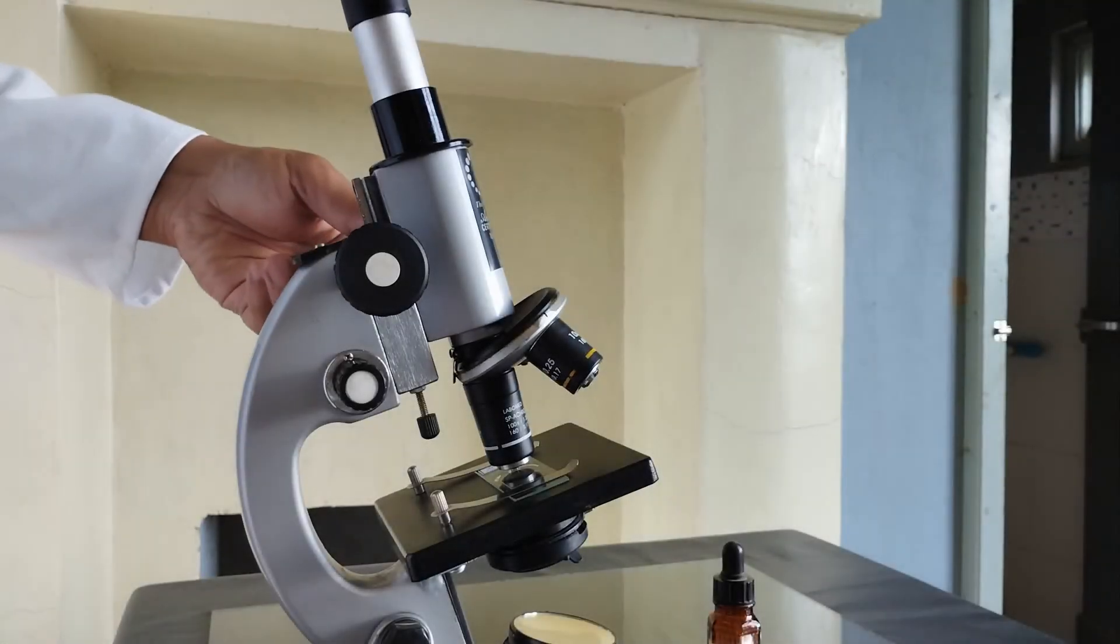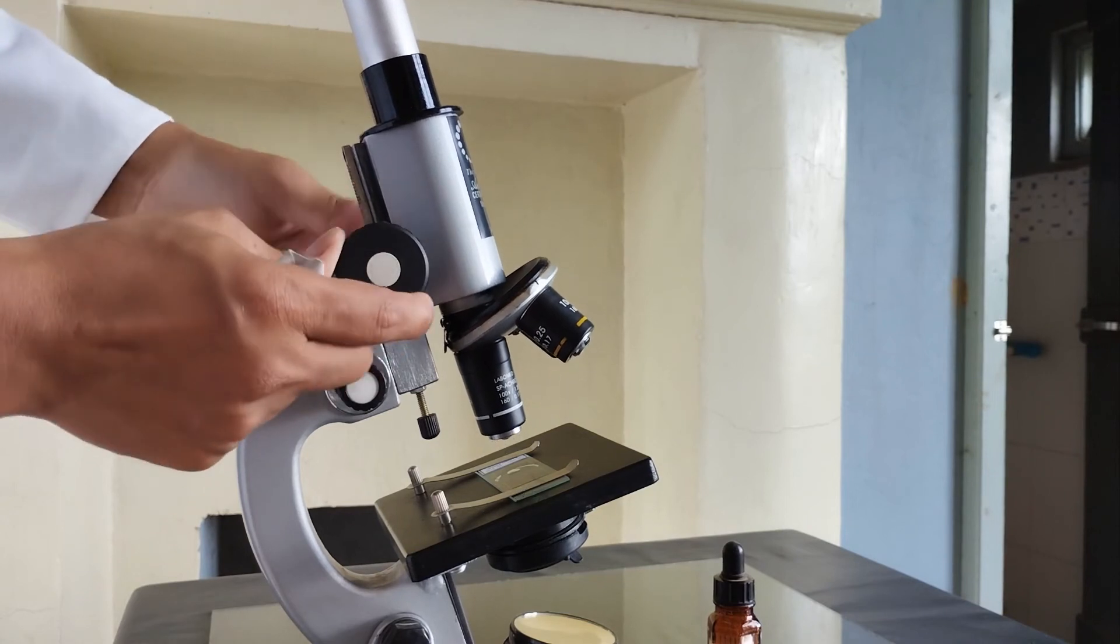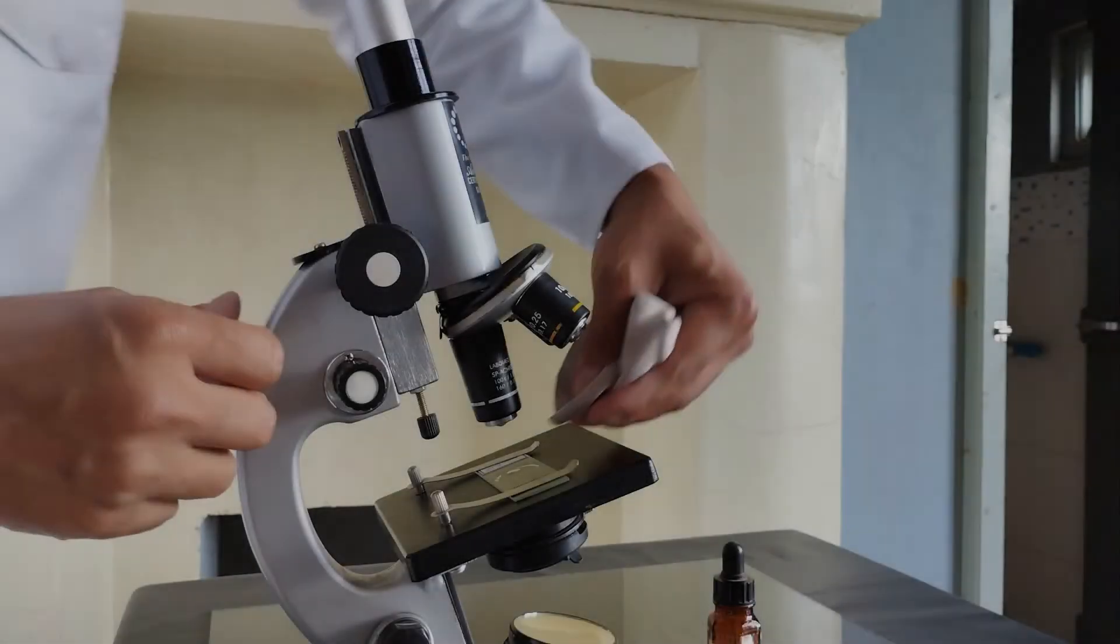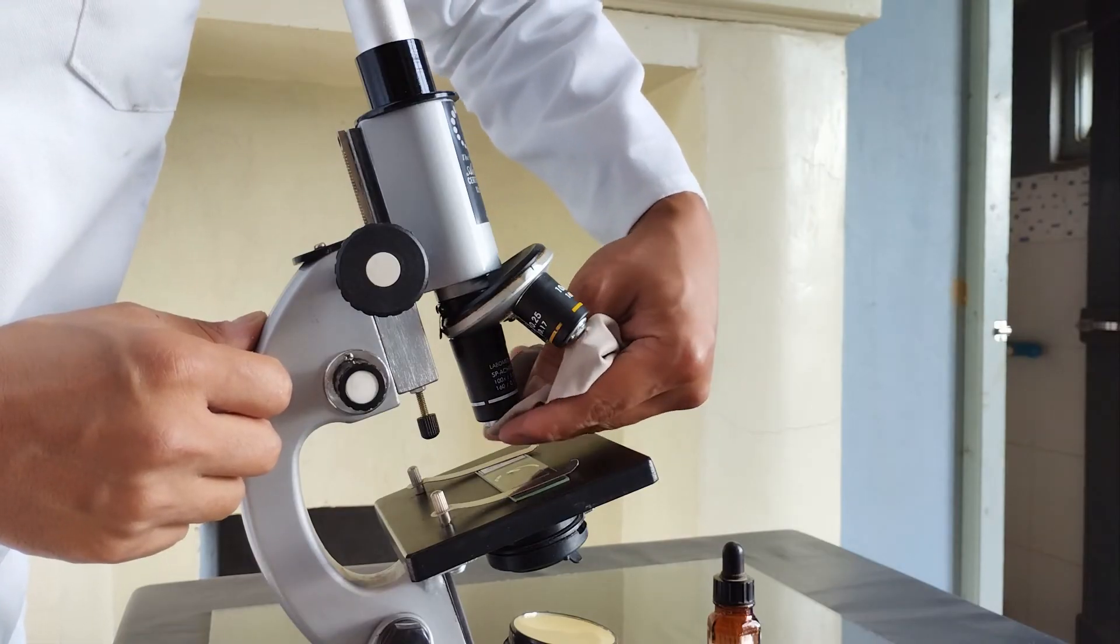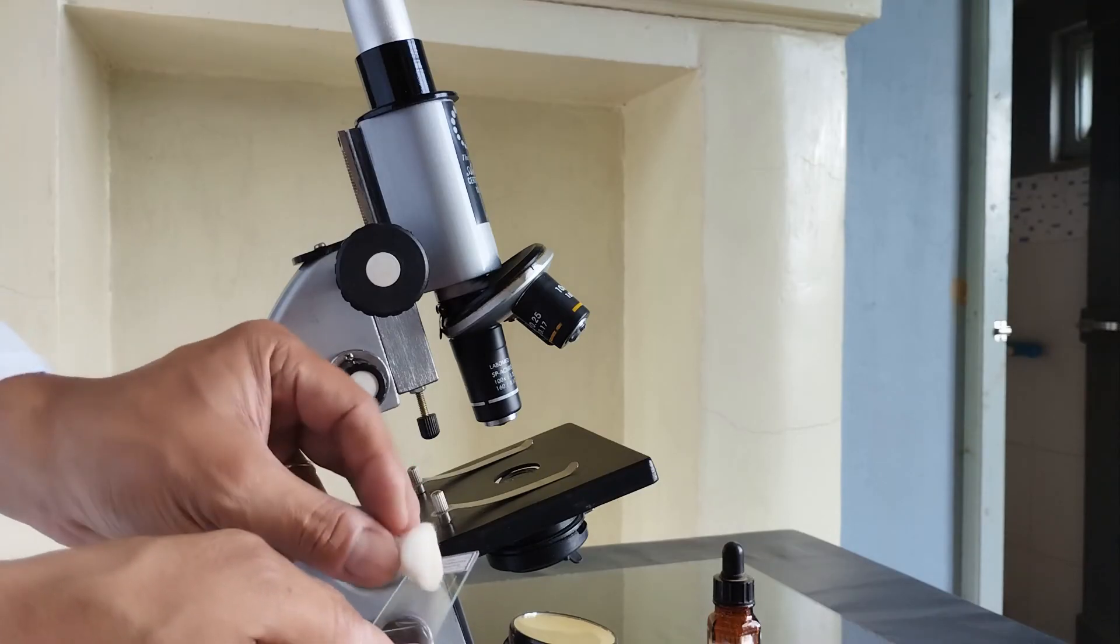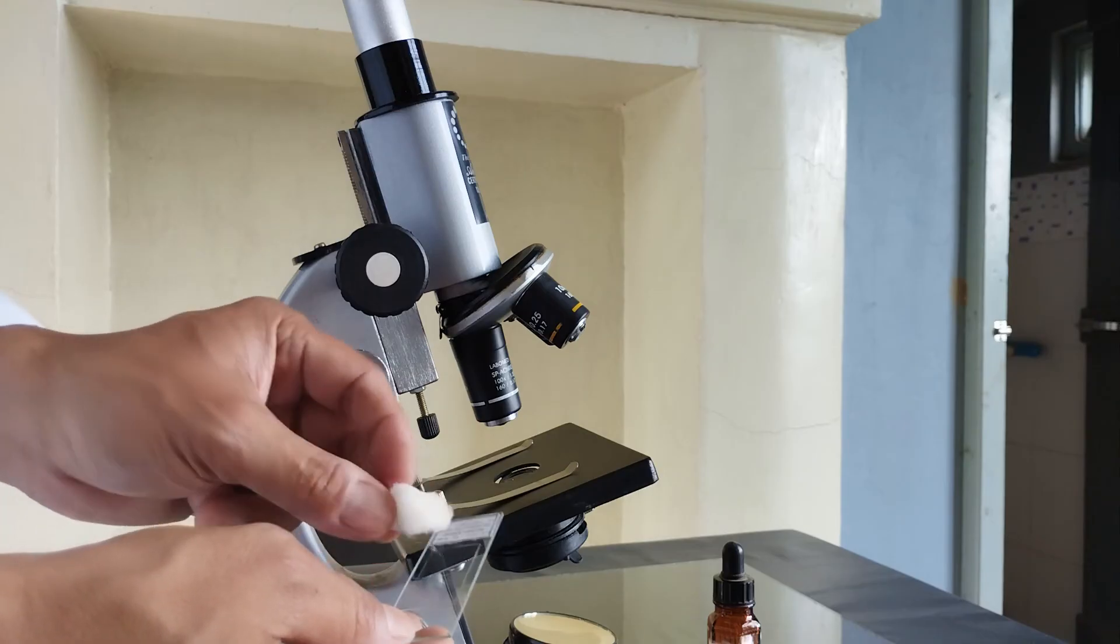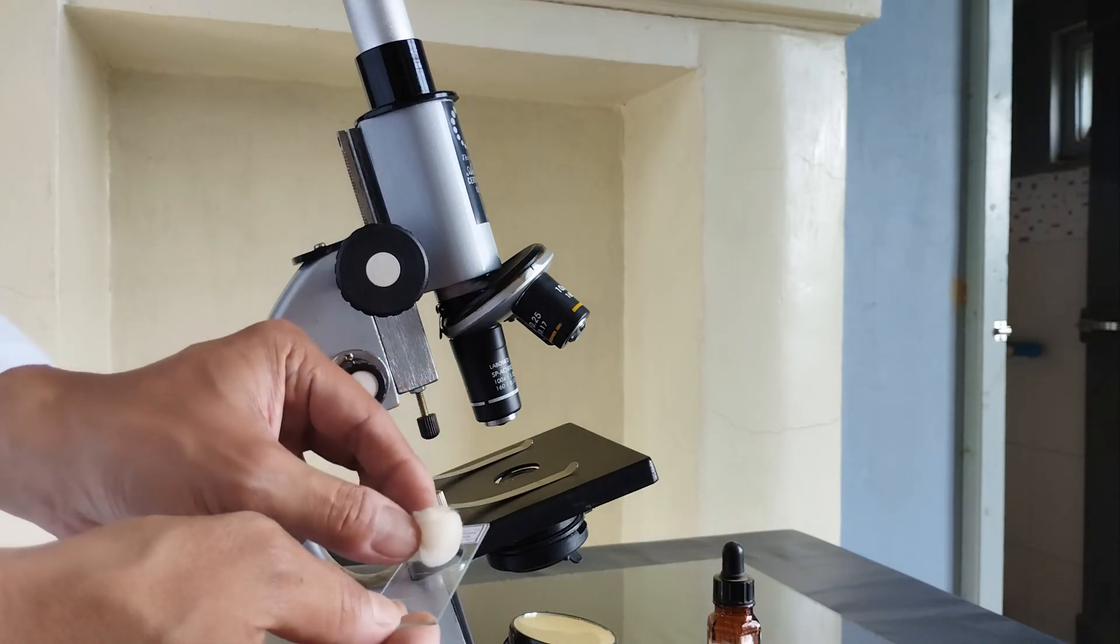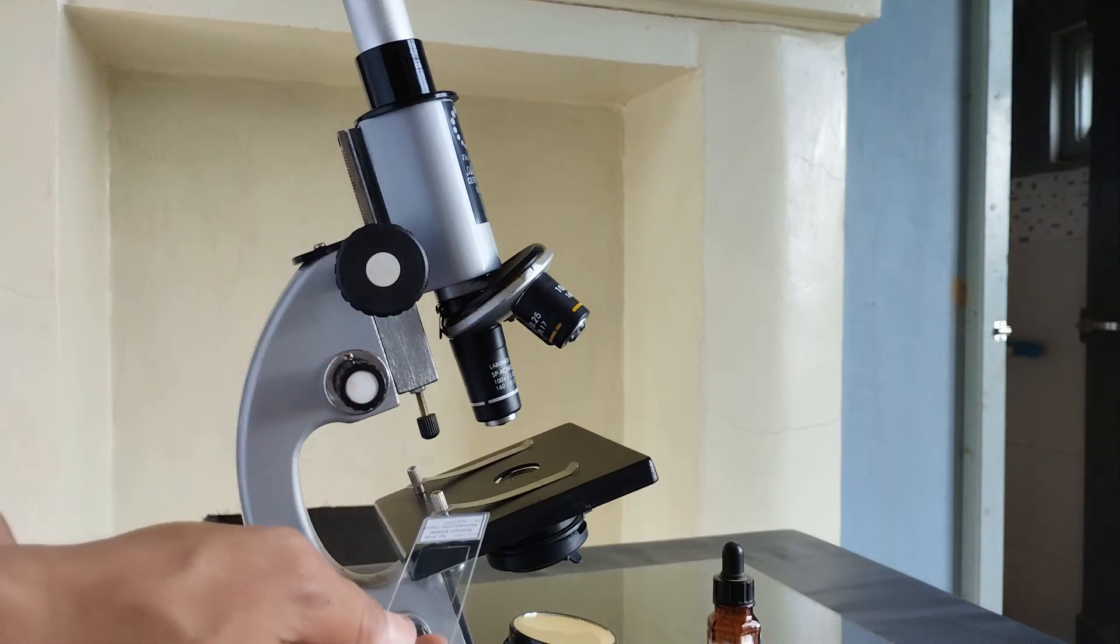Once you're done examining the slide, lift the objective to a fairly high point using the coarse adjustment knob. Wipe the residual oil off of the objective lens using a clean and dry piece of lens cloth or lens paper. Also wipe the oil off from the slide using a cotton ball dipped in acetone. Do not use harsh chemicals such as organic solvents for cleaning microscope lenses. You may however use ethanol or isopropyl alcohol of 70 to 90 percent concentration for cleaning.